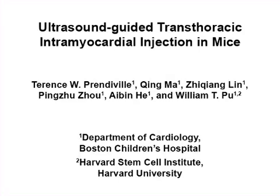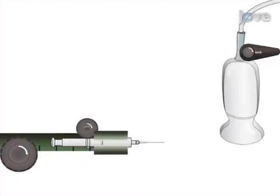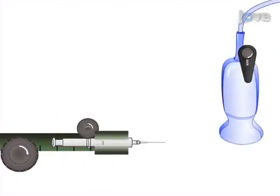The overall goal of this procedure is to deliver an aliquot of injectate safely and accurately to a desired region of murine myocardium under ultrasound guidance.